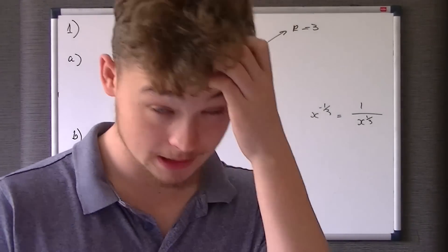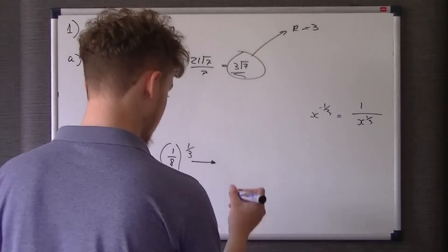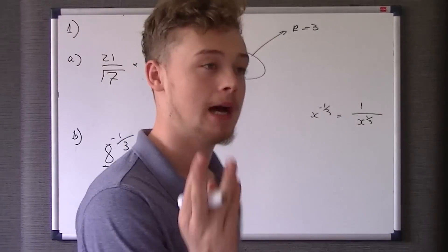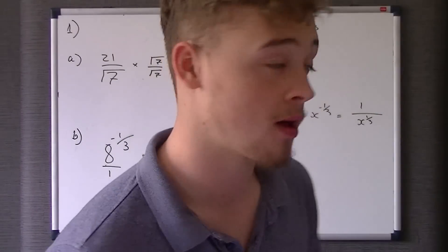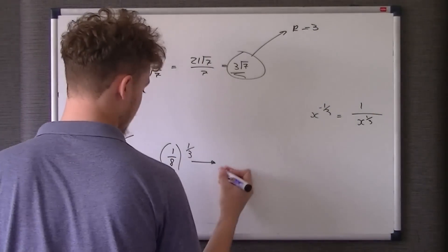So the root, sorry, and the top number is the power. So you cube root it, and then times it to the power of 1, but as times it to power 1 is the same as times it by 1, we just leave it as the cube root of it.